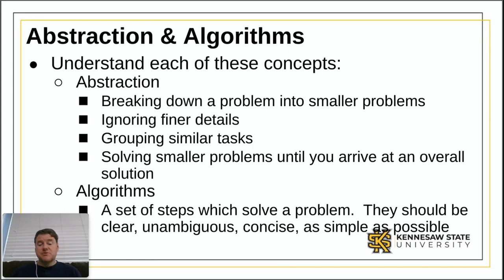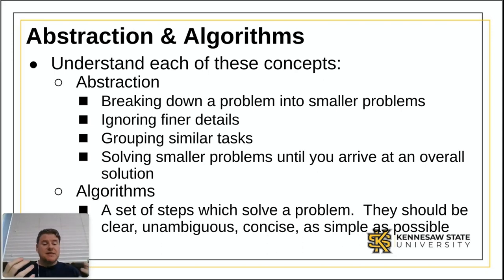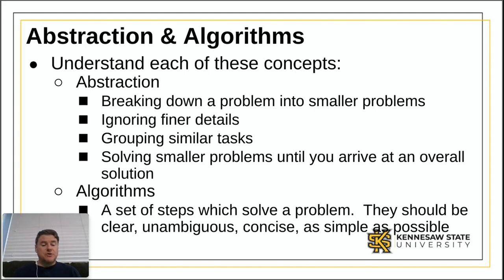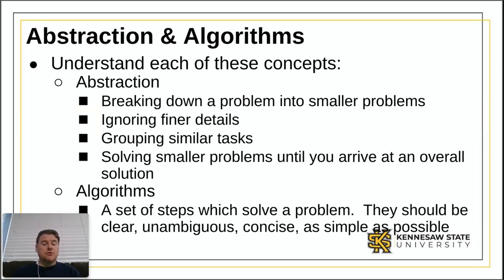We talked about algorithms. An algorithm is a set of steps you need to complete in order to accomplish a task. Those steps have to be clear, very precise, and unambiguous — for example, 'fill the cup half' is ambiguous; it has to be exact. They should also be concise, explaining how to do it as simply as possible. Algorithms sometimes have input and output, and they are how you organize your thoughts for what you're going to do with a computer program.